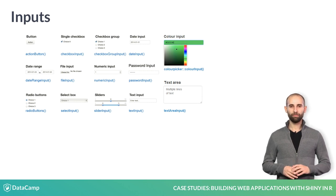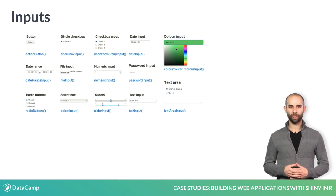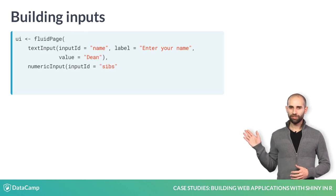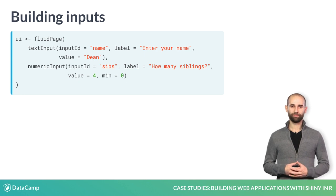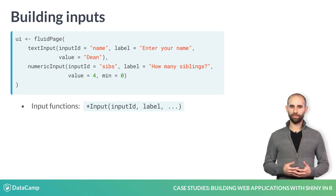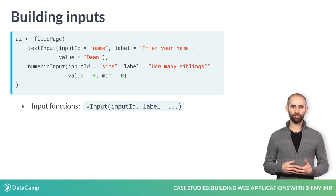In fact, Shiny provides many different input functions, some of which are shown here. Inputs are created by calling an input function inside the UI. Here is the code that creates the two inputs that you saw earlier. Most input functions have the word 'input' in their name and have the same first two arguments: input ID and label.